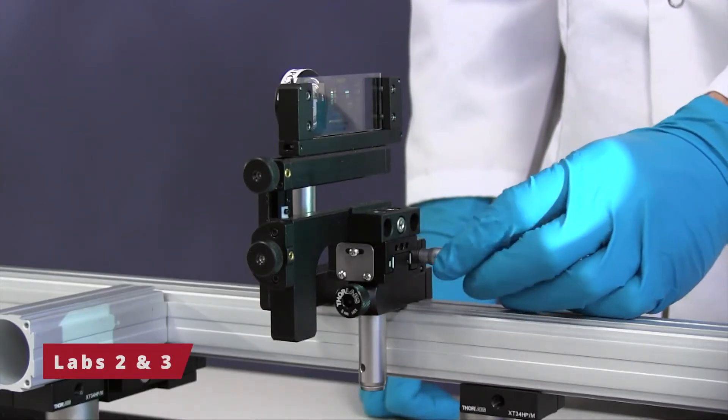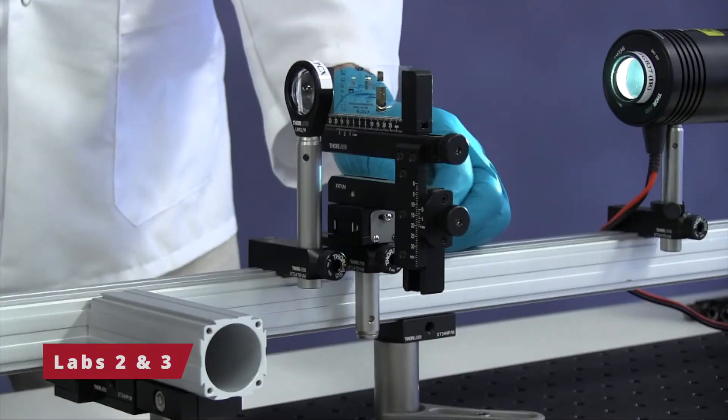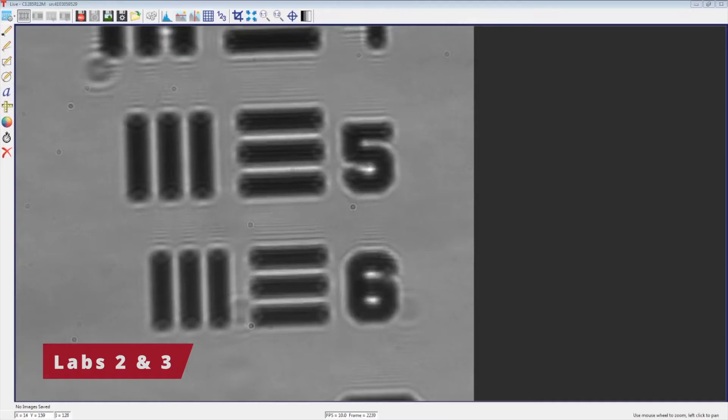Then in Labs 2 and 3, students use a plano-convex objective lens to learn about both aberrations and resolution.